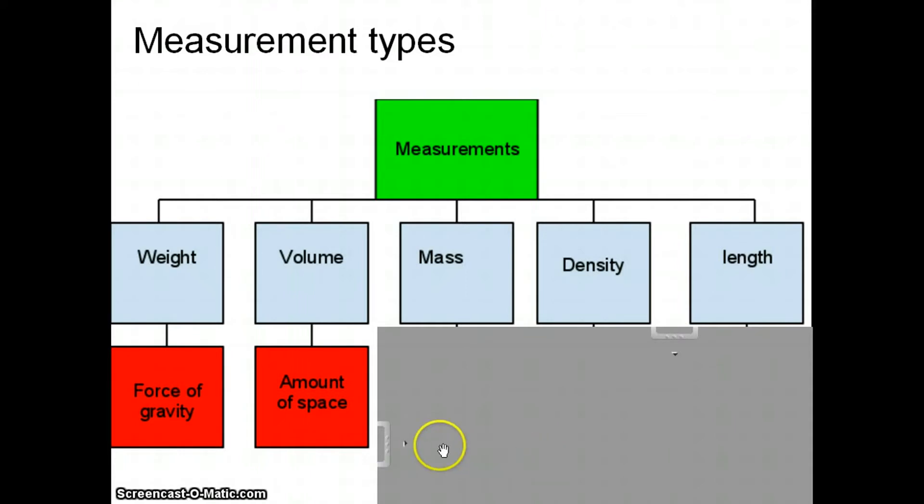Mass is the measure of an amount of matter. What is matter? Matter is what everything is made of. Solids, liquids, gases are all made of matter. Anything that's not matter is energy. So, matter is everything.